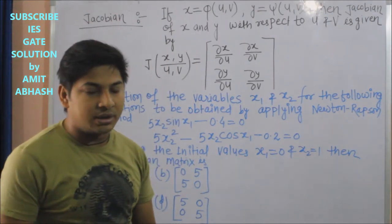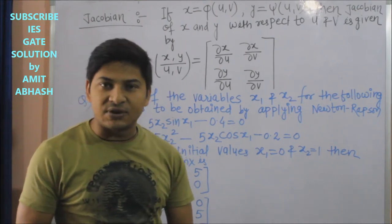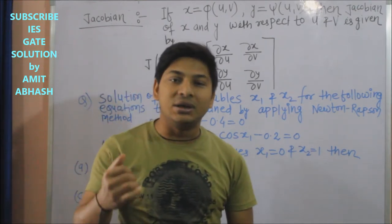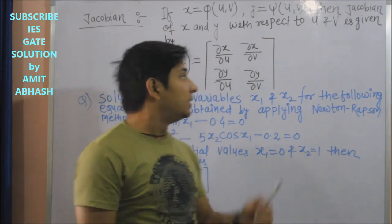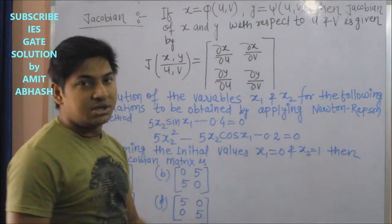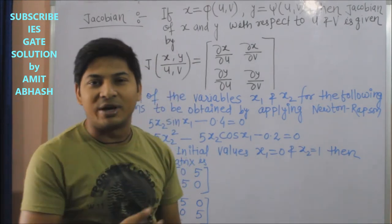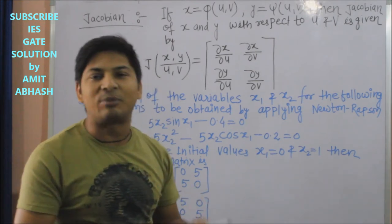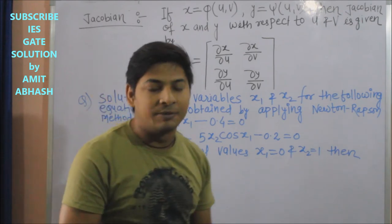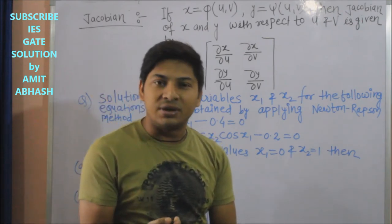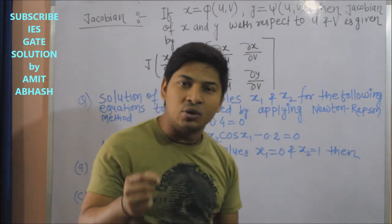Welcome back dear student. In the previous class we finished the homogeneous function along with Euler's theorem and three cases. Then after, Jacobian - you can say this you will not find in the generalized book. This type of question came in the gate exam, so I think you should cover it.